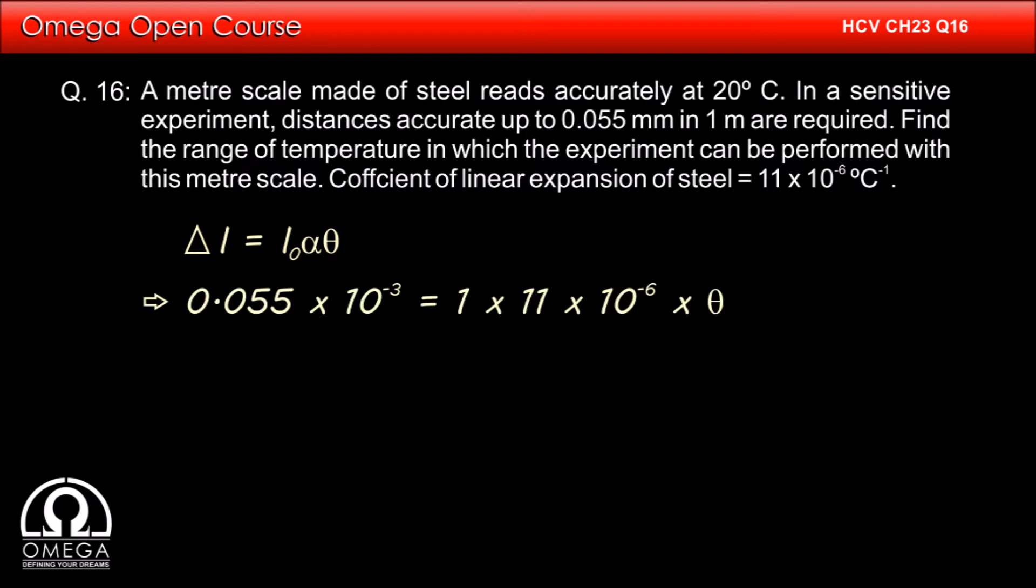Putting the values, we get 0.055 x 10^-3 is equal to 1 x 11 x 10^-6 x theta, or theta is equal to 0.055 x 10^-3 divided by 11 x 10^-6.